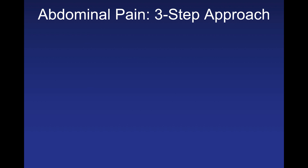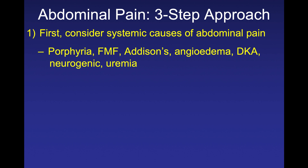We want you to think about a three-step approach, beginning first with systemic signs and symptoms. Ask whether there are systemic causes driving the pain. For example, strangely colored urine with abdominal pain may suggest porphyria. A patient from the Mediterranean with recurrent abdominal pain crises may have familial Mediterranean fever. Also look for endocrine changes in the skin or blood sugar, as Addison's disease and diabetic ketoacidosis can present with abdominal pain. Consider uremia in patients with deteriorating kidney function. Never think about abdominal pain in isolation — always consider comorbidities.